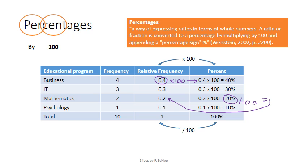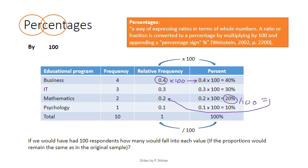Percentages, in essence, answer the question, if we would have had 100 respondents instead of the, in this example, 10, how many would fall into each value? So in this case, if there would have been 100 people instead of 10, most likely 40 would fall in business, 30 in IT, 20 in mathematics, and 10 in psychology.